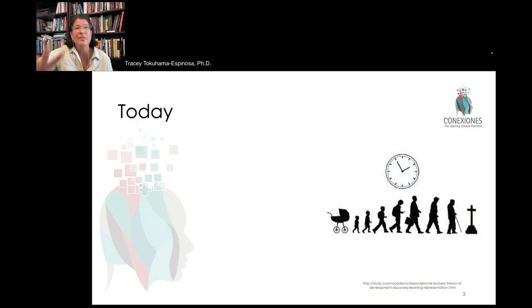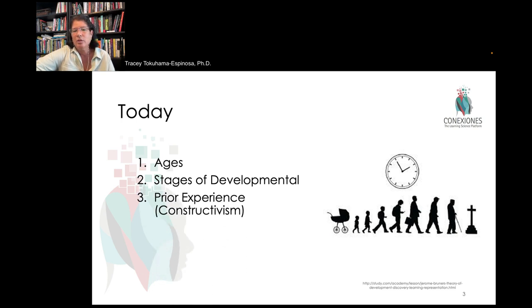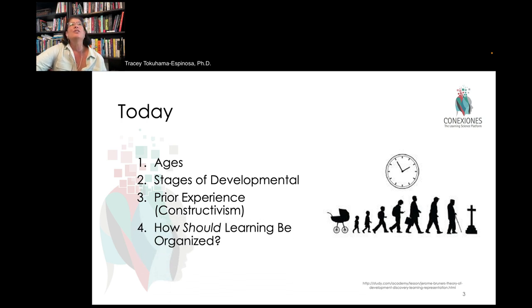A lot has been focused on developmentally appropriate activities, and we wanted to bring that out into the open and talk about how we use labels to maybe categorize people in perhaps not the most accurate ways. We're going to be looking at what we mean by ages — chronological ages — what we mean by stages of development, the role of prior experience as it builds the brain, and what that means about the way we organize school education based on age groupings.